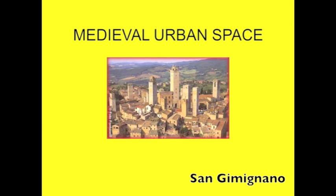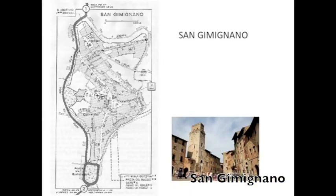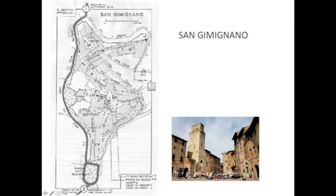Right now San Gimignano is full of towers, but in the Gothic period there would have been far more. Here's a map of San Gimignano, and a surprising discovery: it is a Roman town. It's hard to lay out the Cardo and Decumanus on a hill, so there's a little wiggling, but it's essentially a rational plan.